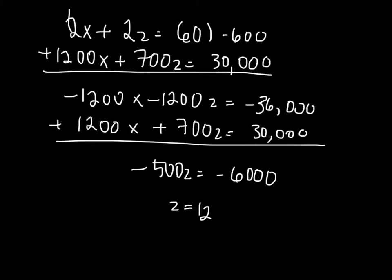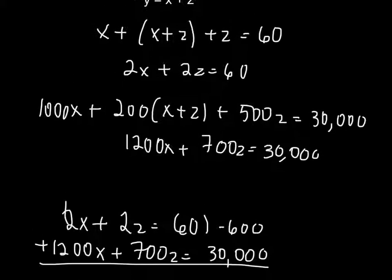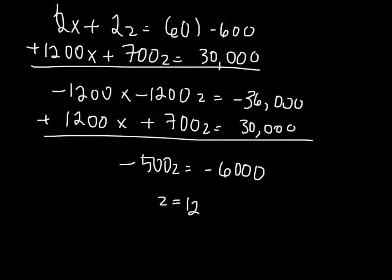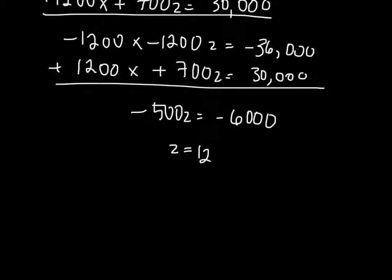We can plug z equals 12 into either of our first or second equations to solve for x, and after solving we get x equals 18. Then we solve for y using one of our original equations and get y equals 30.